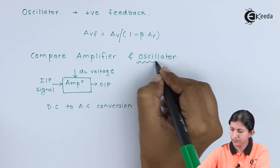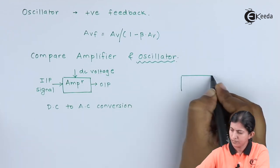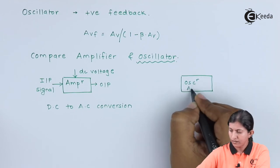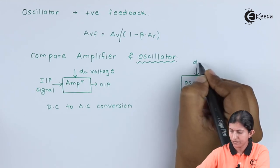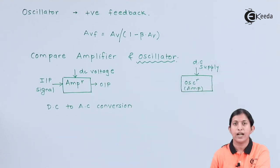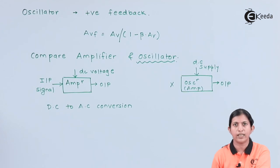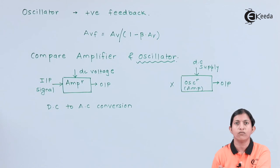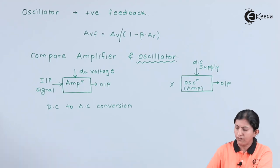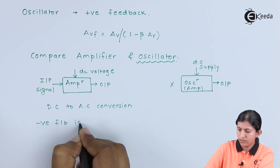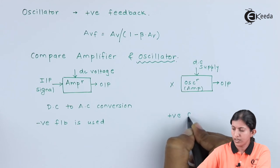Now consider the oscillator. In the oscillator, the amplifier takes the DC supply and generates the output, but it does not require any input signal. So an oscillator is a circuit that takes DC voltage and converts it into AC voltage without requiring an input signal. In an amplifier, negative feedback is used, whereas in an oscillator, positive feedback is used.